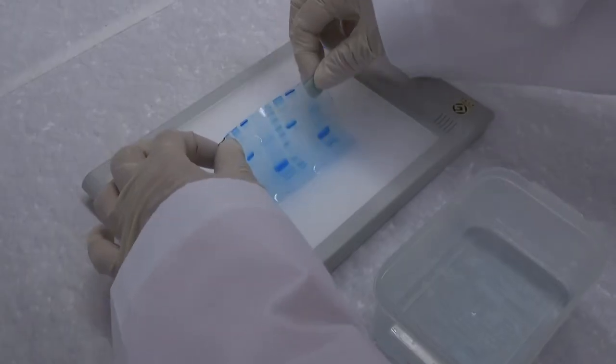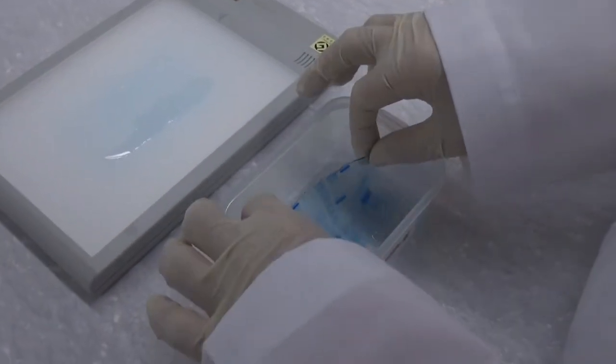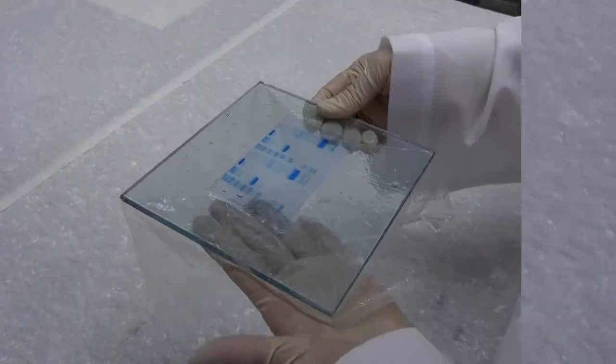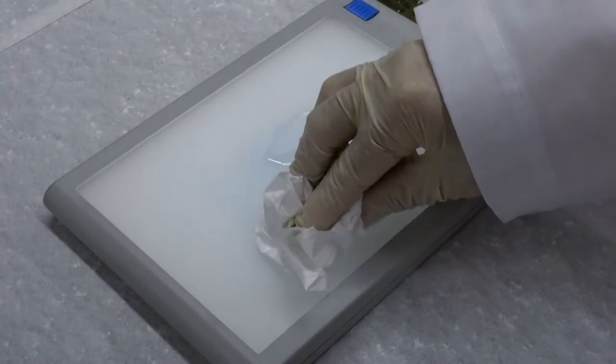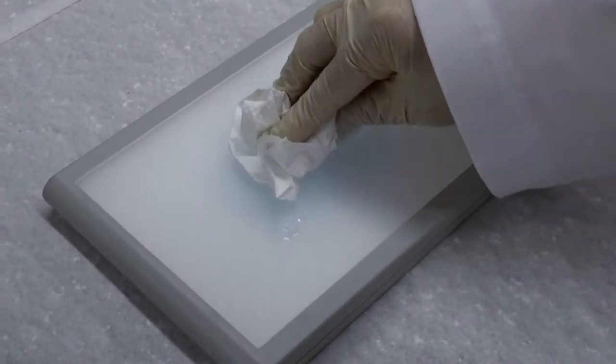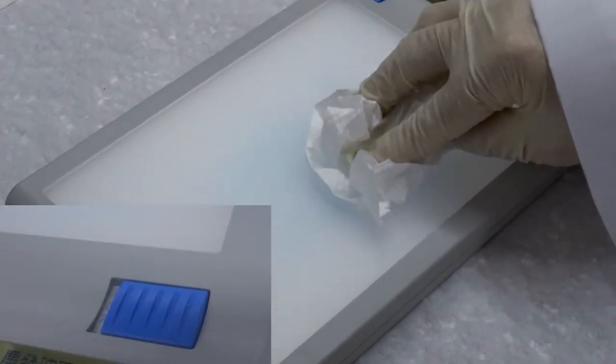After taking the pictures, carefully move the gel back to a container, or seal the gel in clear food wrap for storage. Remember to wipe away residual liquid from the light box and turn off the power.